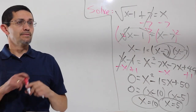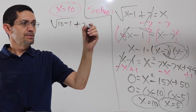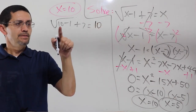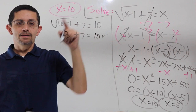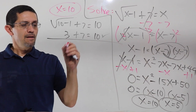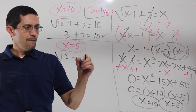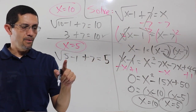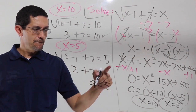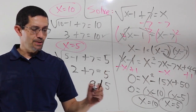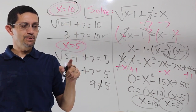Let's plug it back in. Let's do 10 first. My original: square root of 10 minus 1, plus 7 equals x which is 10. 10 minus 1 is 9, square root of 9 is 3, and 3 plus 7 is 10. That means 10 is a valid answer. Now let's plug in 5: square root of 5 minus 1, plus 7 equals 5. 5 minus 1 is 4, square root of 4 is 2, 2 plus 7 is 9, not 5. So these two are different, therefore x equals 5 is not an answer — it's called an extraneous solution. The only answer is x equals 10.